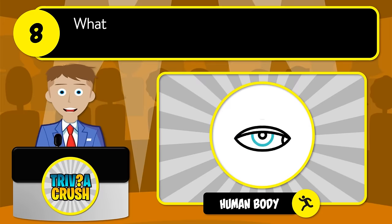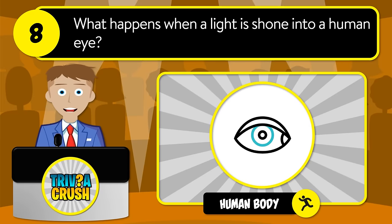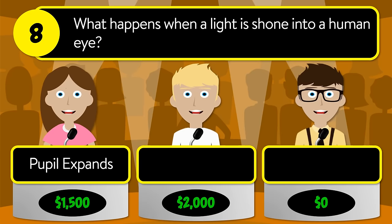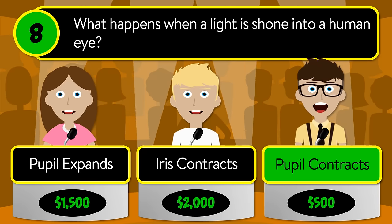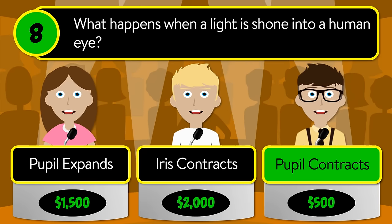Question number eight: what happens when a light is shown into a human eye? Is it pupil expands, iris contracts, or pupil contracts? The correct answer is pupil contracts.